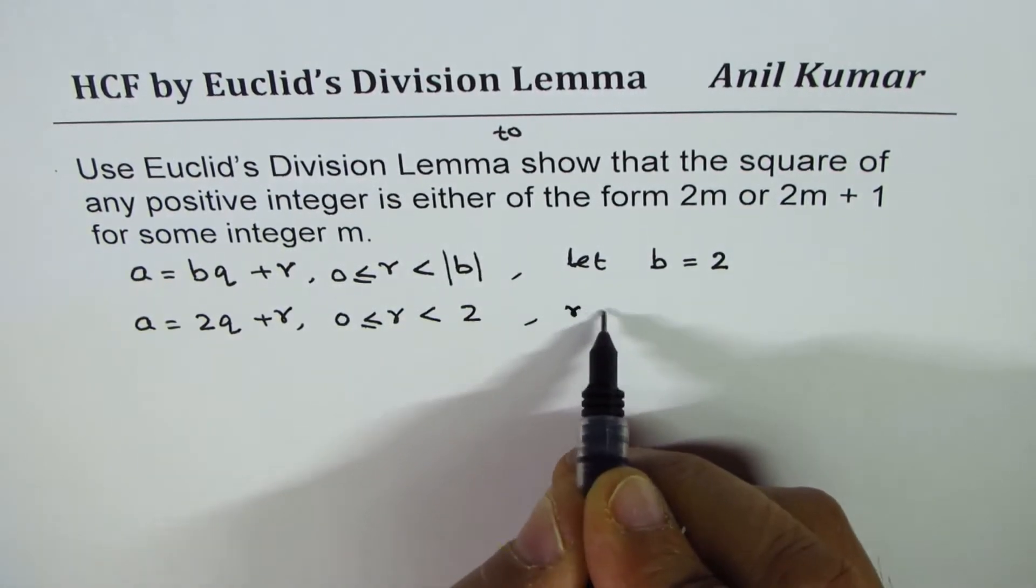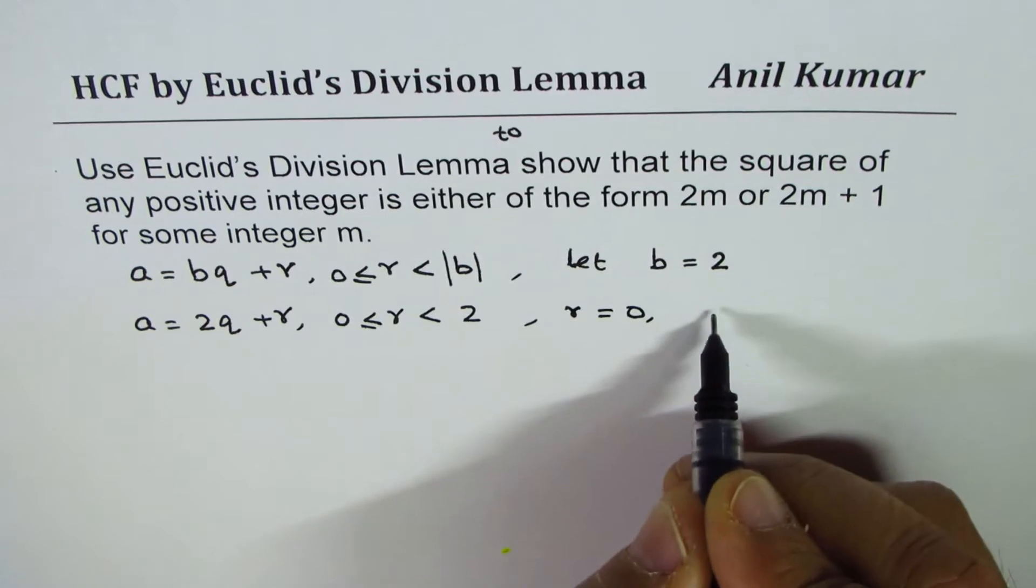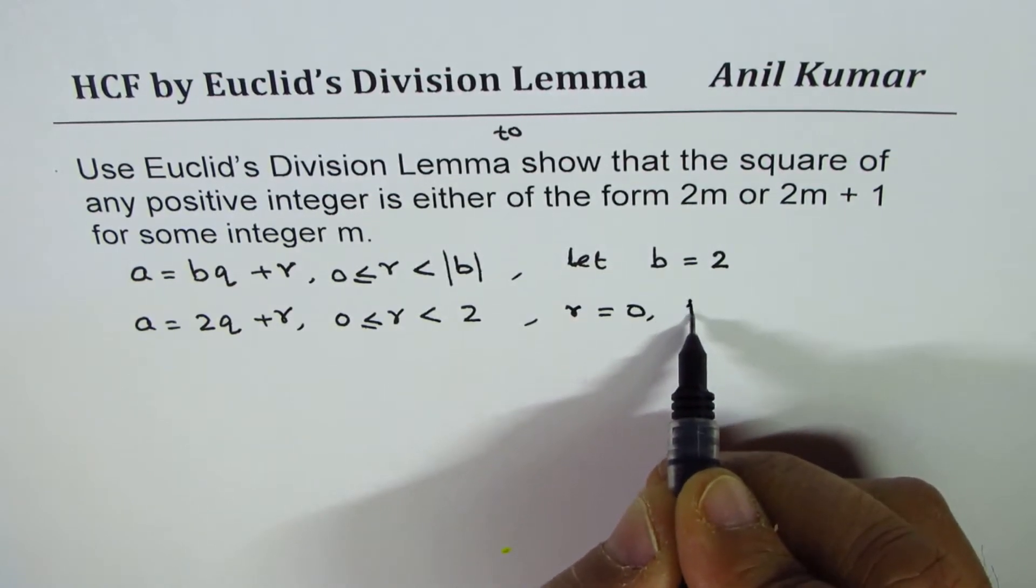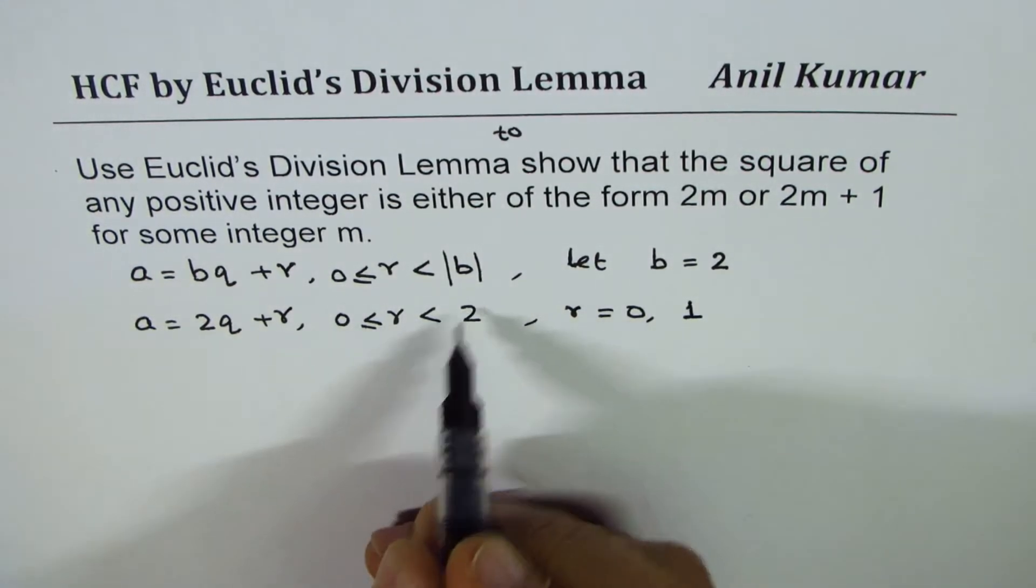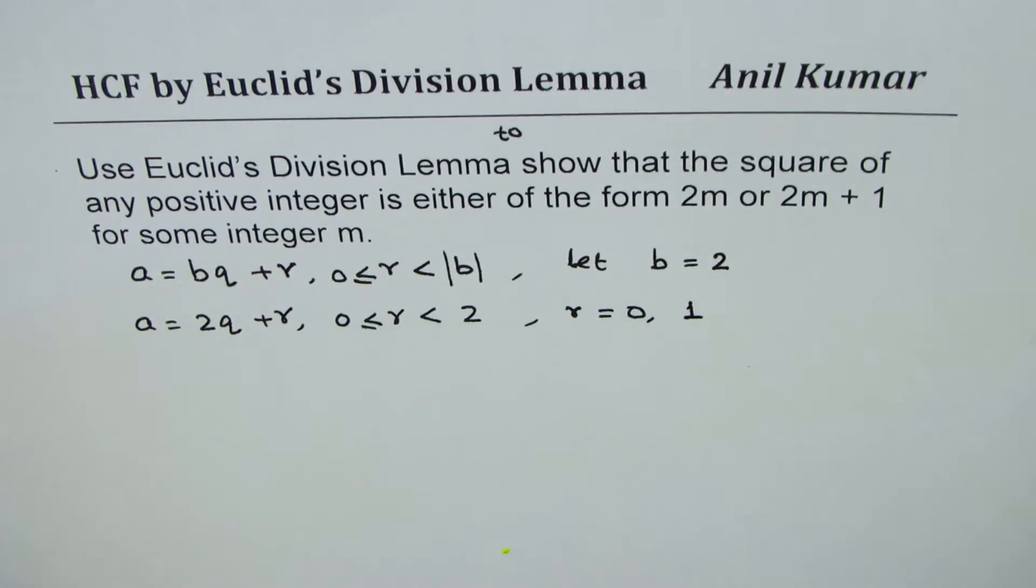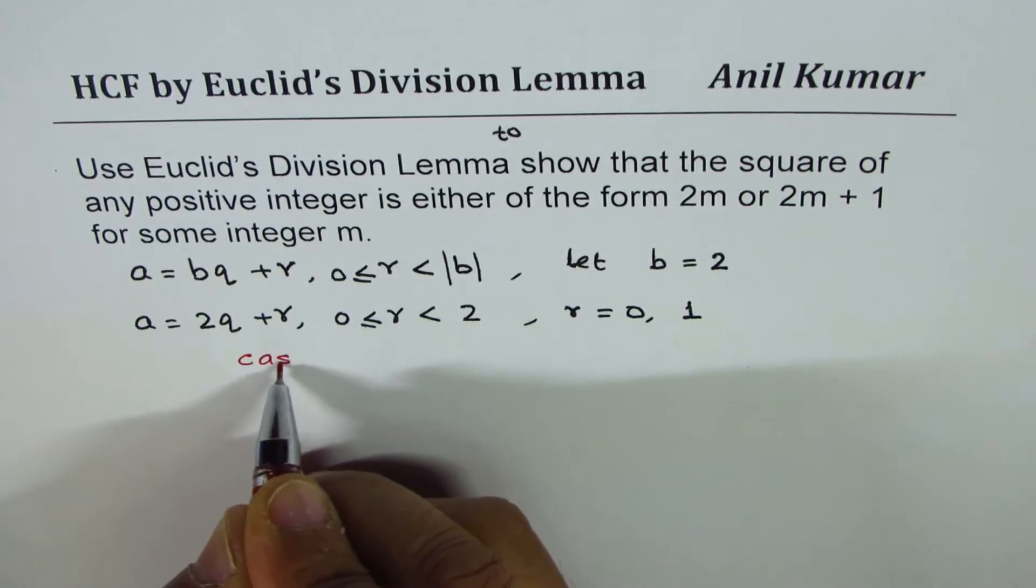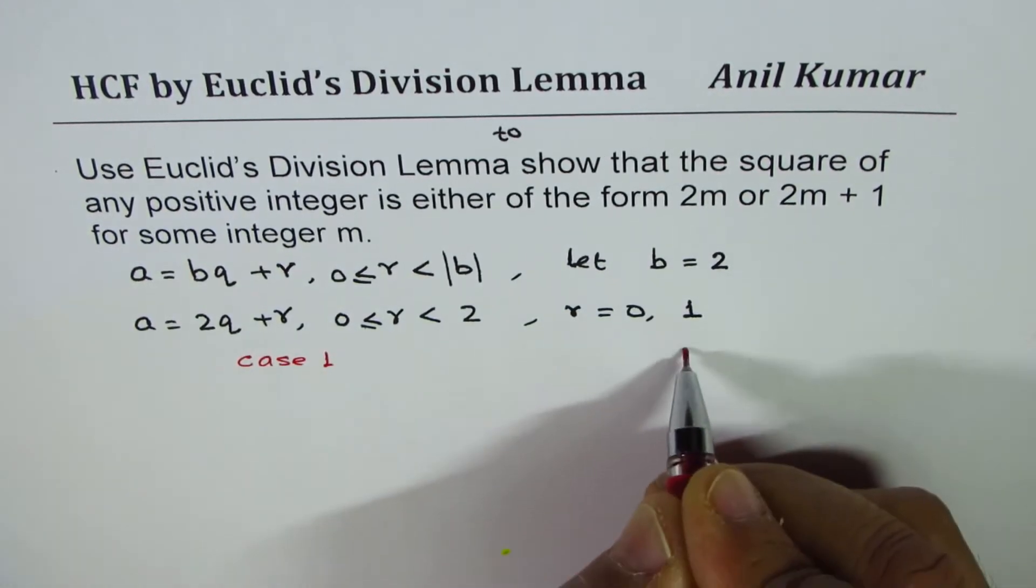That clearly shows that r could be equal to 0 or equal to 1, but it cannot be 2 since it is less than 2. So that gives you two cases to work with: Case 1 and Case 2.